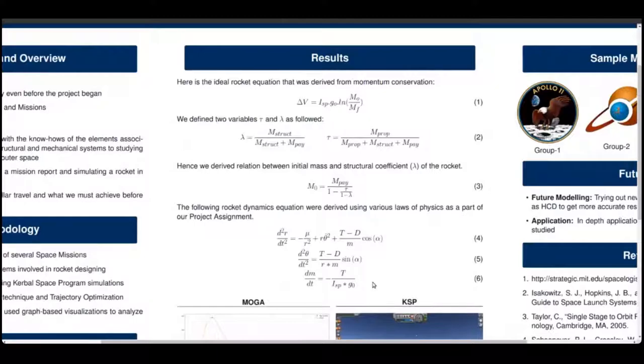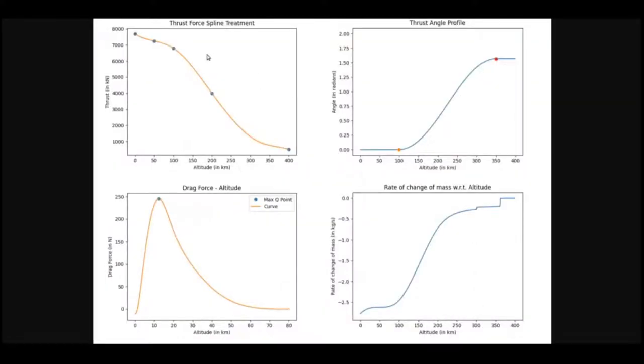From the initial parameters, the thrust produced by the rocket at five different altitudes, we obtained a spline curve of thrust versus altitude in order to know the thrust at any general altitude.